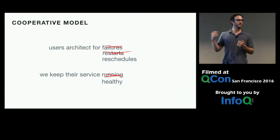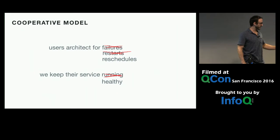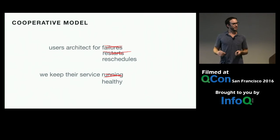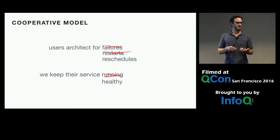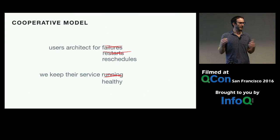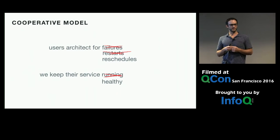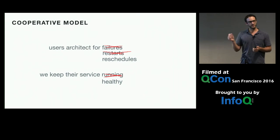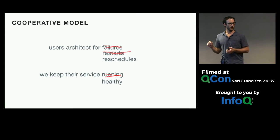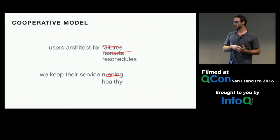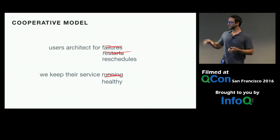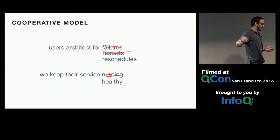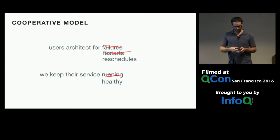As a platform, we ensure their system is up and running and healthy. We don't actually guarantee that all instances making up your service are running, and we don't even guarantee at most n are running simultaneously — we may actually create additional instances, say if there's a network partition, to ensure sufficient instances. These are important subtleties because this is how we model the platform and how we expect users to architect their systems. Architect for rescheduling, and we keep your services healthy.